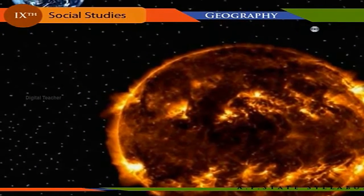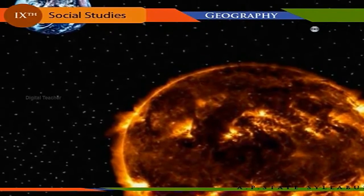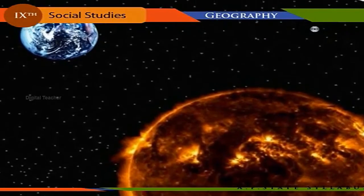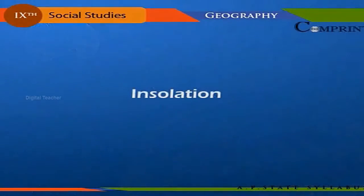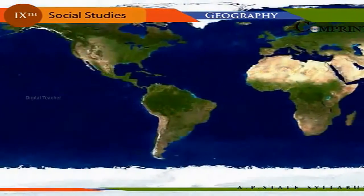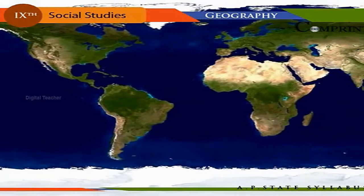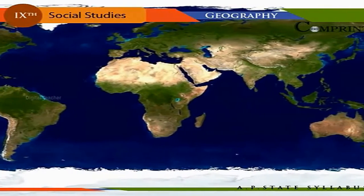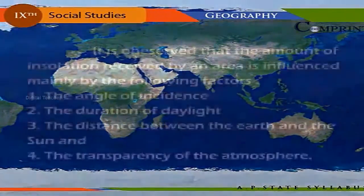Our planet receives only a minute fraction — one 2,000 millionth part — of solar radiation, due to its small size and great distance from the Sun. The incoming solar radiation is called insolation. The quantity of insolation received is called the solar constant. The proportion of radiation reflected to the amount received is called the albedo, expressed in percentage points.